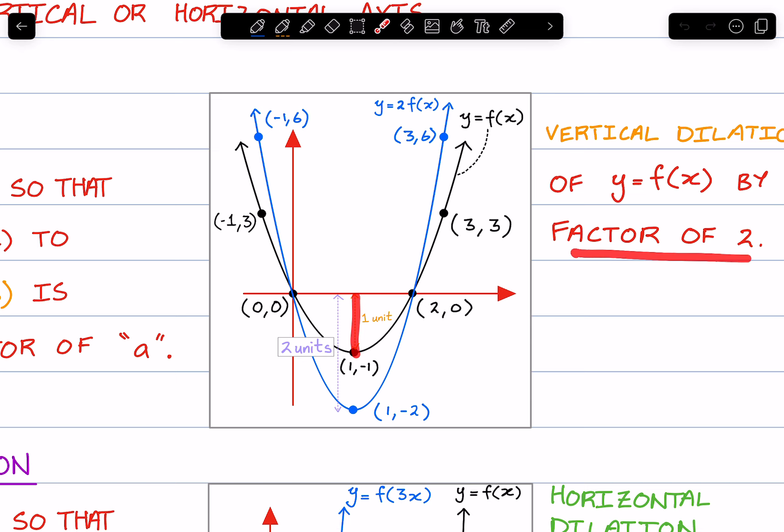I've emphasized it here as well. This point has the coordinates negative 1, 3. That's the original distance of 3. By a vertical dilation of 2, it is now going to be 6.